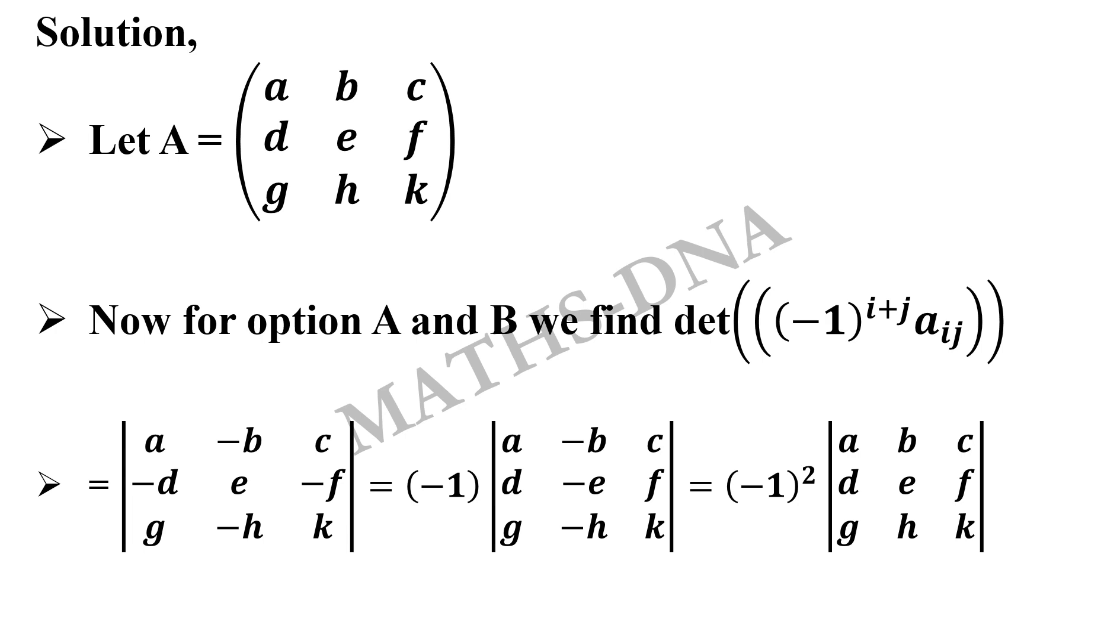Similarly for C, first row third column minus 1 raised to 1 plus 3 which is equal to 4 and that gives 1. So C remains as it is. So we get negative sign at A12, A21, A23 and A32: B, D, F and H.